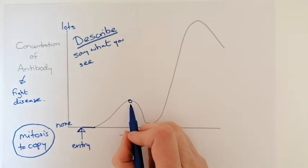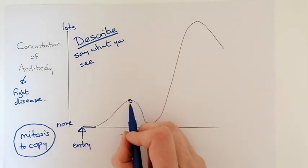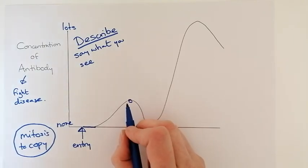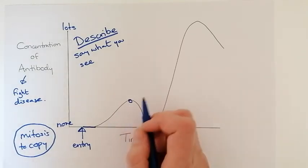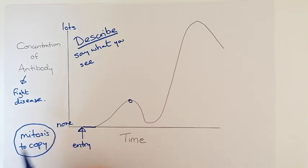This is where your white blood cells know how to fight the infection and they have won the first time. So you've got sick, you've been unwell, you've had all the symptoms, your white blood cells have copied themselves by mitosis and they have made lots of antibodies and they've killed off that bacteria or that pathogen and you are now starting to get better.